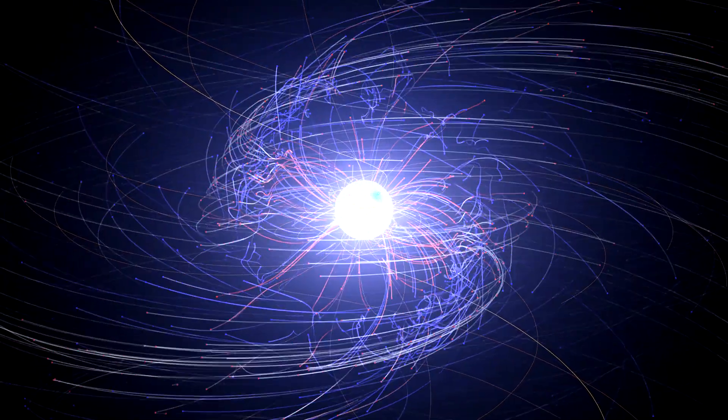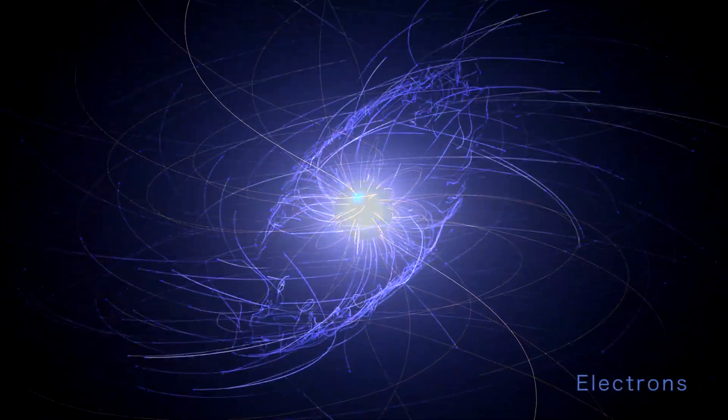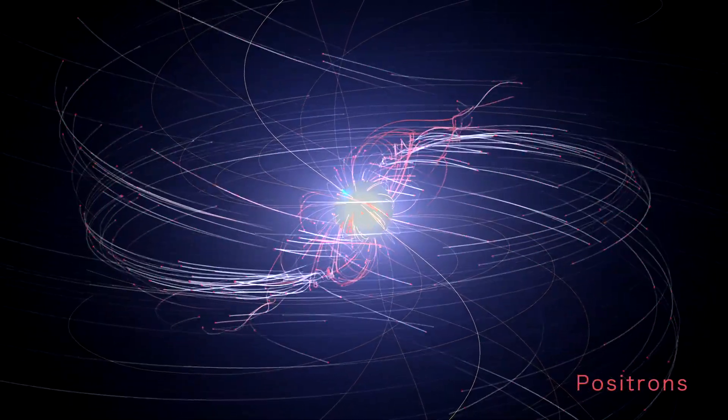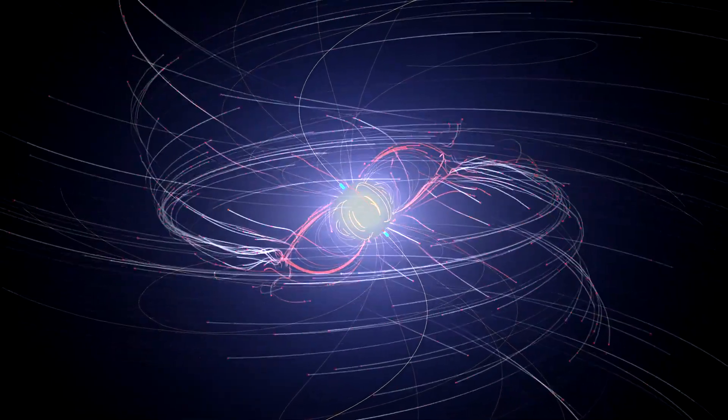New computer simulations clearly show these incredible movements for the first time. Most of these particles are electrons and their antimatter counterparts, positrons. In these simulations, their colors get lighter as they attain higher energies.